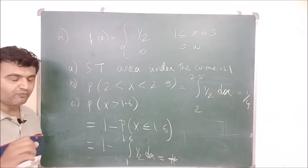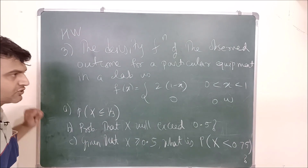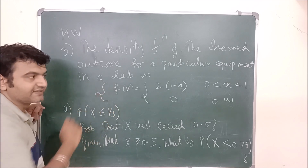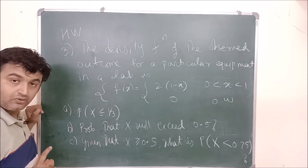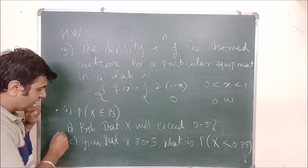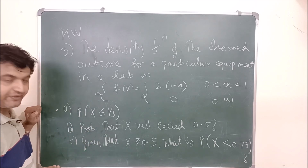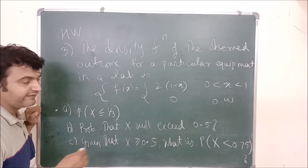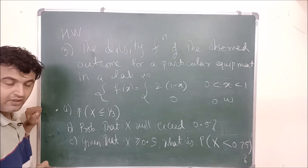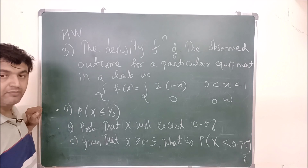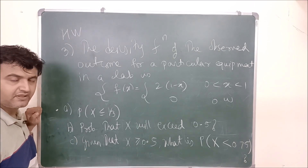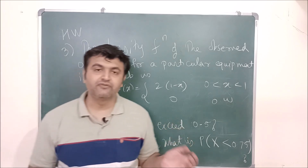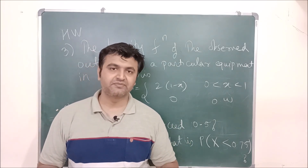Now let me give you one homework problem. In a lab there is some equipment for which the density function of the observed outcome is given by: f(x) = 2(1 − x) for 0 ≤ x ≤ 1, and zero otherwise. You have to find the probability that X ≤ 1/3, and the probability that X exceeds 0.5 given that X ≥ 0.5. Pause this video, take a notebook and pen, and try to solve it. If you get stuck, see solved examples from your textbooks, and if you still have doubts, ask me in the comment section. I hope this is clear — do not forget to like, share, and subscribe. Thank you.